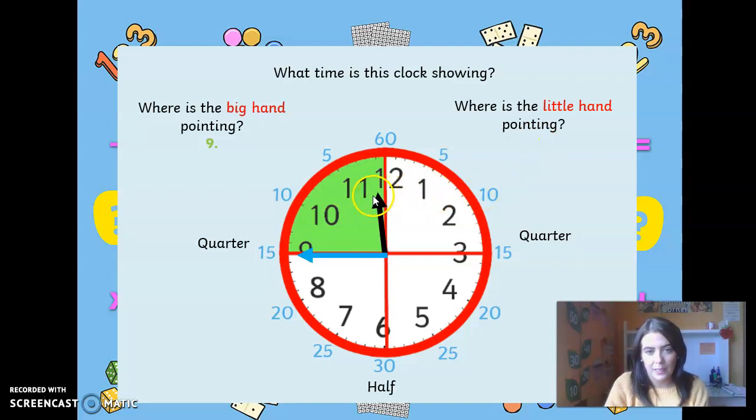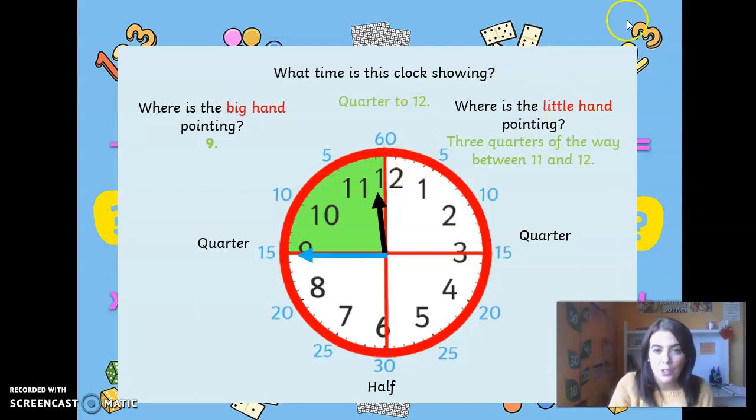Where is the little hand pointing? Well done. It's pointing in between 11 and 12. So three quarters of the way between 11 and 12. So it's quarter to 12. Well done.